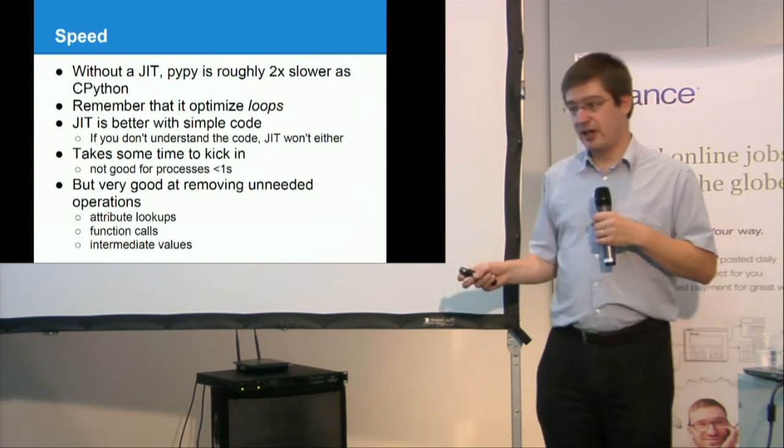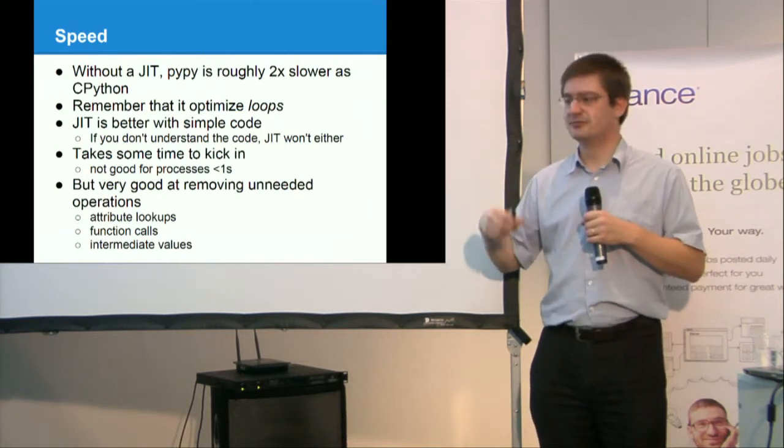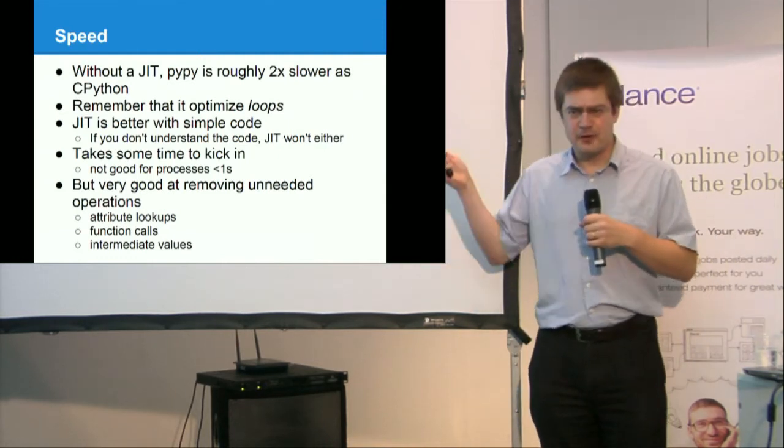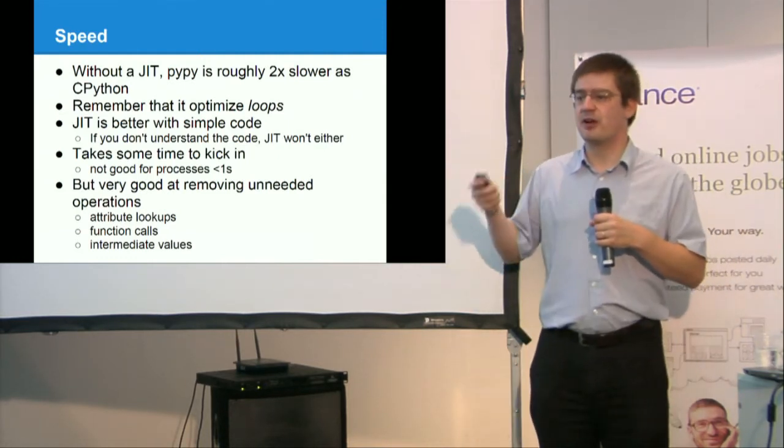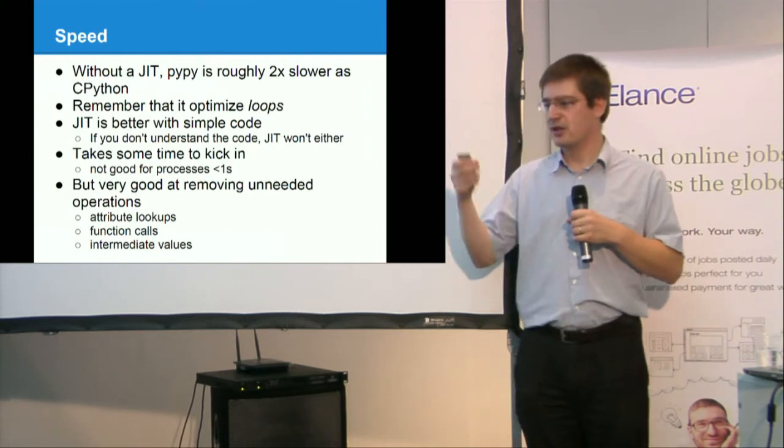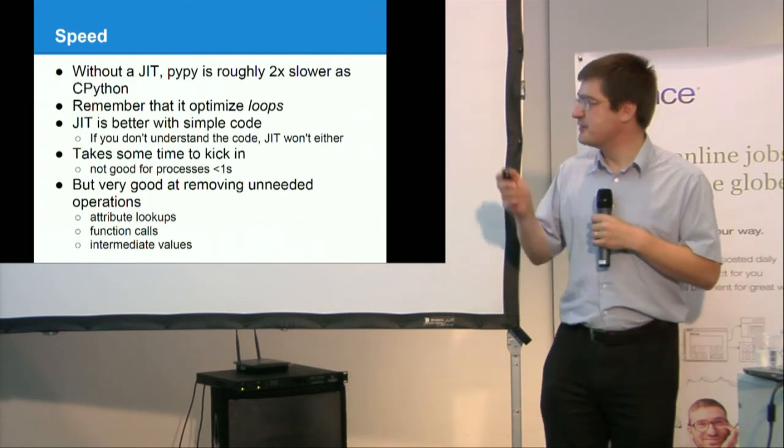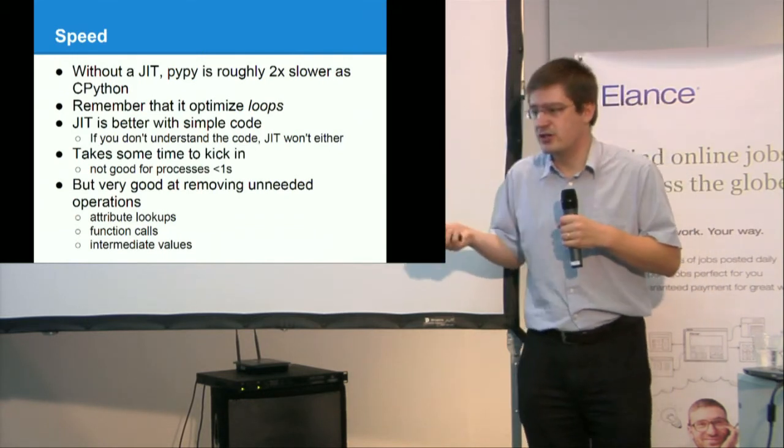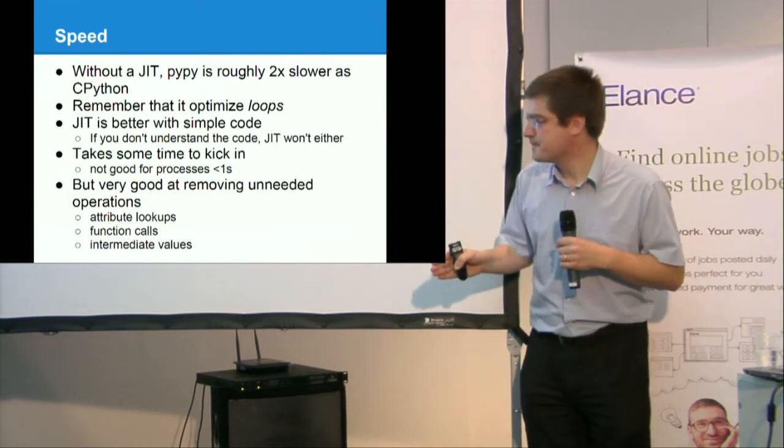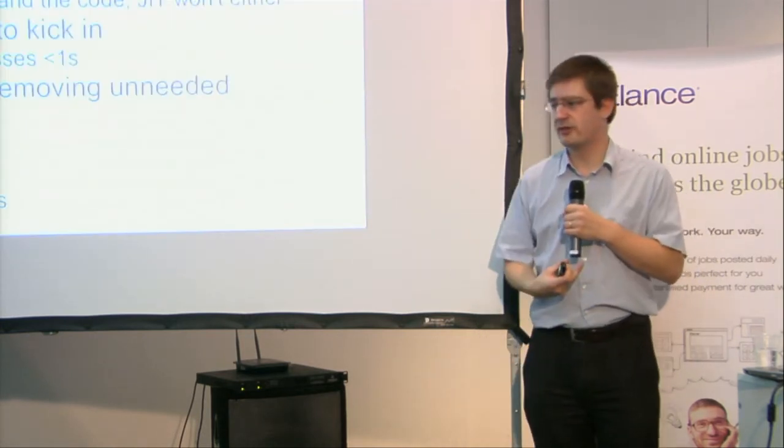PyPy is better with simple code. If you just access attributes, just call functions, that's it. If you try to be too clever, PyPy will not, the just-in-time will not understand what you are trying to do, or the loop it has to analyze will be much larger with complex operations, and it won't succeed to generate efficient machine code. The just-in-time, on the other hand, is very good at removing any operations in normal Python code. Just like attribute lookups, function calls that are inlined, and of course, destroy intermediate values, completely avoid allocation of intermediate values.